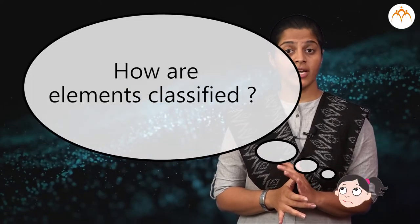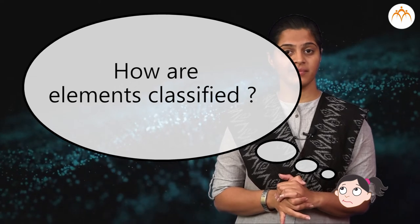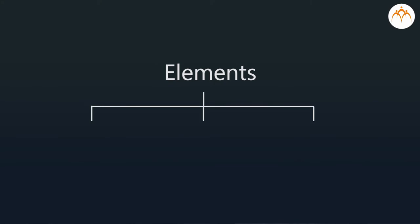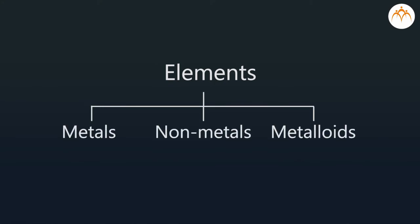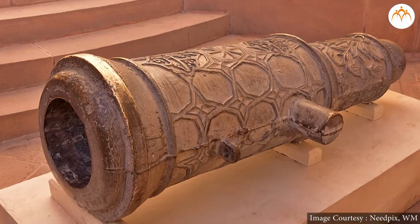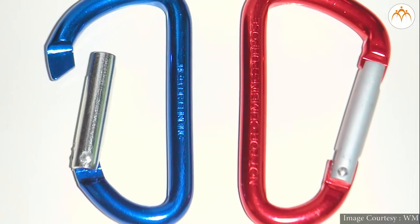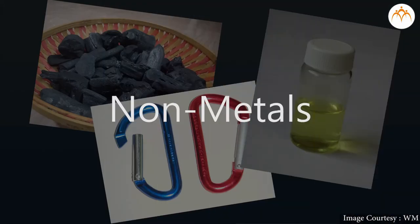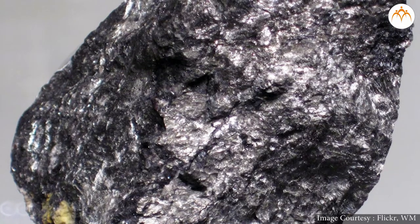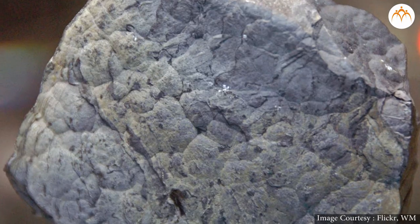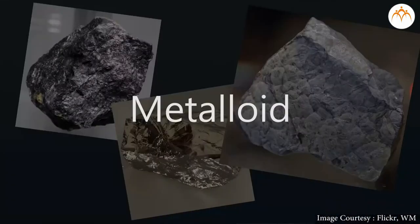Can you tell me how are elements classified? Correct — metals, non-metals and metalloids. We know that metals show specific properties. The elements showing these properties are grouped under metals. The elements which do not show these properties are grouped as non-metals, and those elements which show some properties of metals and some of non-metals are called metalloids. We will now learn more about these properties.